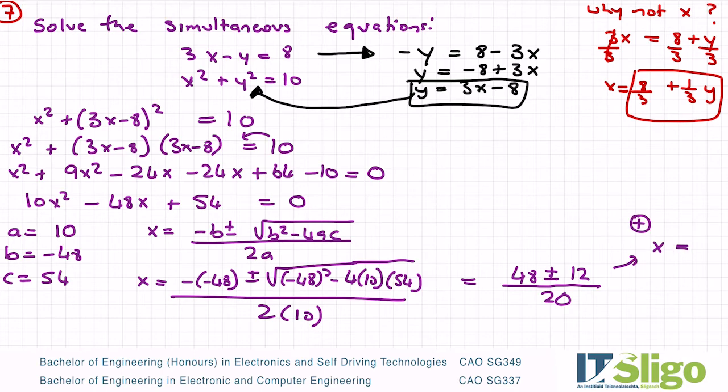Let's break it up now into the plus one: 48 plus 12 over 20 is 60 over 20 which is 3. 48 minus 12 all over 20... So that's the x's worked out: 3 and 9 over 5.